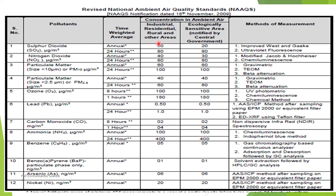The table also shows acceptable concentration levels for different area types — industrial areas, residential and rural areas, and ecologically sensitive areas, which have stricter concentration limits. Various methods of measurement are also listed, such as the improved West-Gaeke method and ultraviolet fluorescence for sulfur dioxide, and the modified Jacob method and chemiluminescence for nitrogen dioxide.